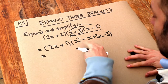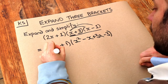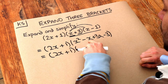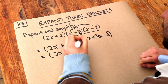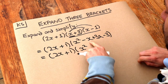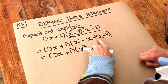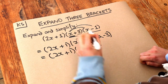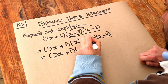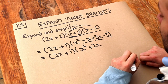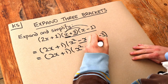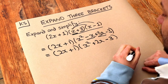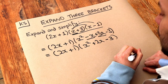Now let's tidy up that bracket by collecting like terms. There's only one x squared term, so we just leave x squared as it is. However, minus 1 lot of x plus 3 lots of x is plus 2 lots of x. You can always underline these terms to make the collecting clearer. And then we've got that minus 3. Now look — we've got two brackets, and we know how to multiply out two brackets.